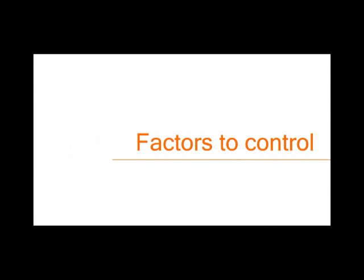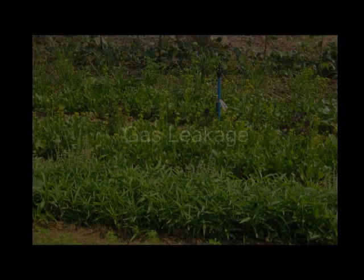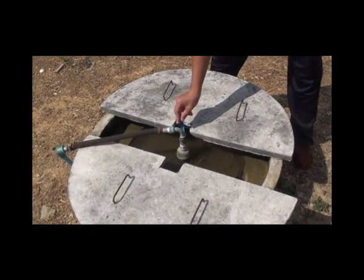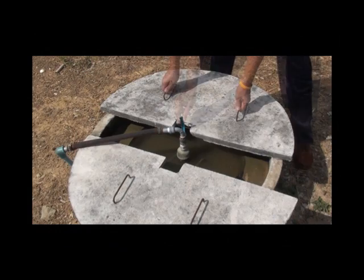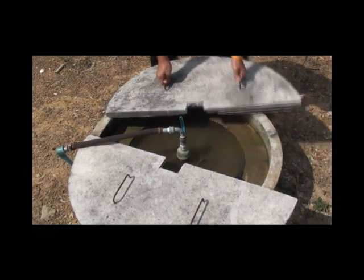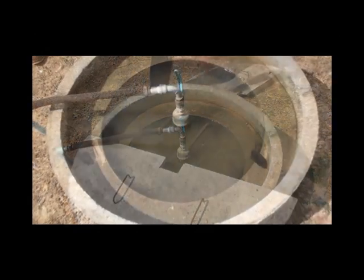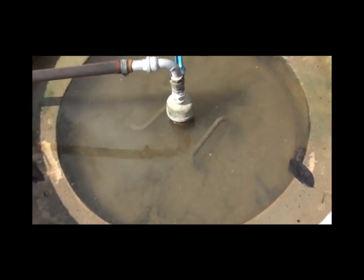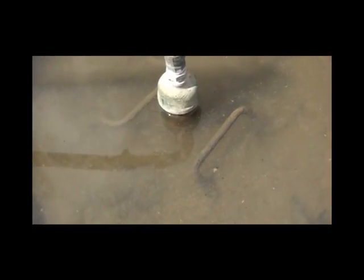You must be aware that there are several factors that need to be controlled. Gas leakage can be observed from water at the opening to the digester tank. If there is any leakage, bubbles will form in the water.